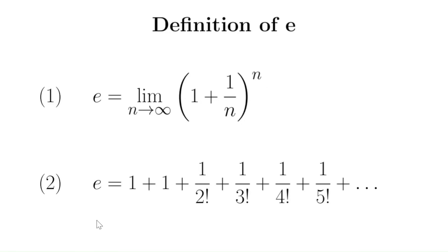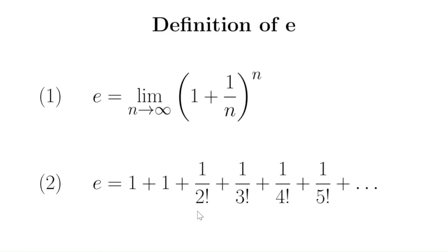But there's another definition of e, and this is the one we'll be using in our proof: e is the sum of the reciprocals of the factorials. Zero factorial is just one, so we can think of this as 1 over 0 factorial plus 1 over 1 factorial plus 1 over 2 factorial and so on. This series converges quite rapidly to e because the factorials grow large very fast. 10 factorial, for example, is already over 3 million. Even adding just the first three terms gets us to 2.5, which is pretty close to e.